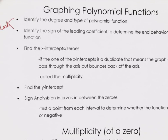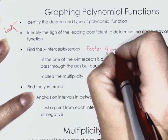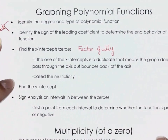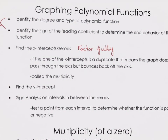You need to find the x-intercepts — that's the factoring fully part. Because when we have it in factored form, those factors turn into our x-intercepts. Factors turn into the x-intercepts. You need to remember your multiplicity rules — these are new.